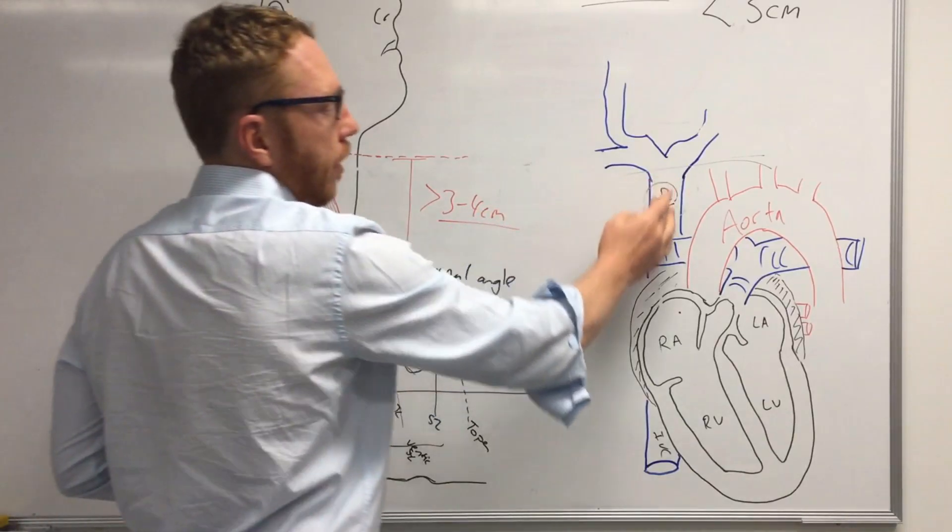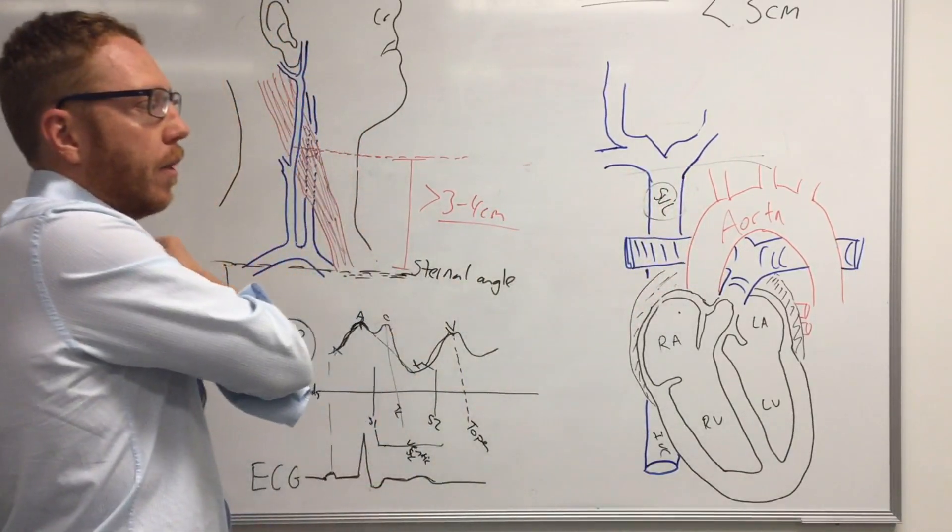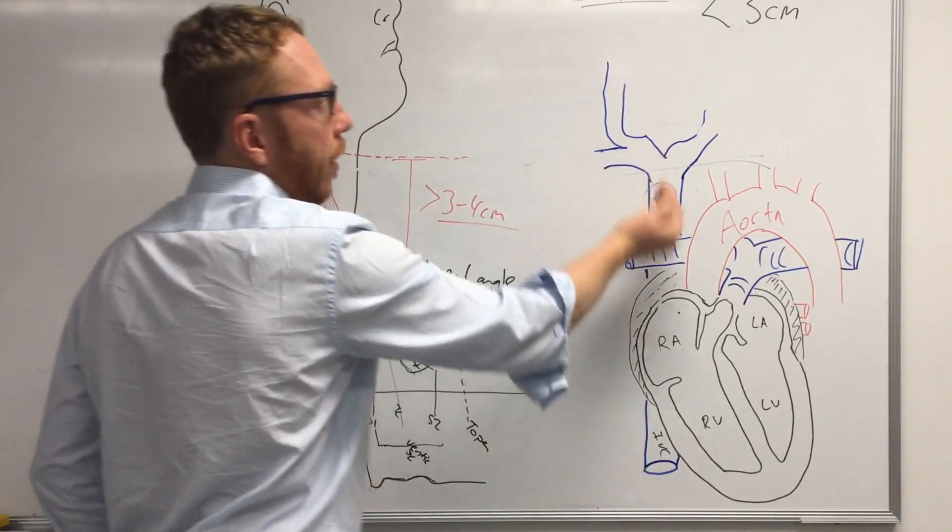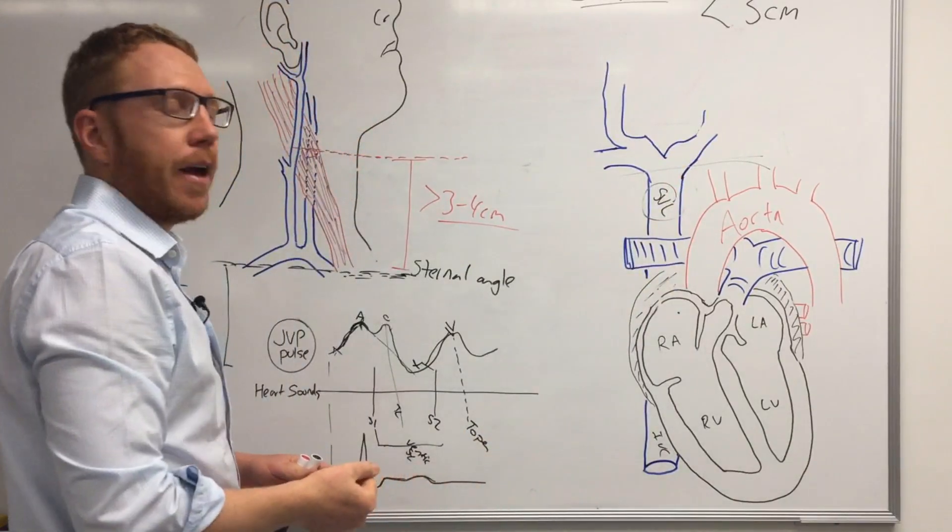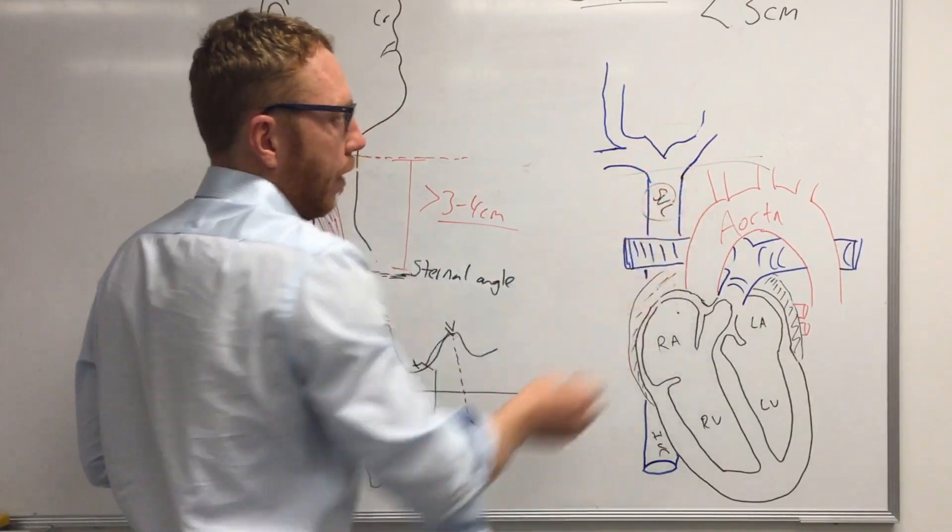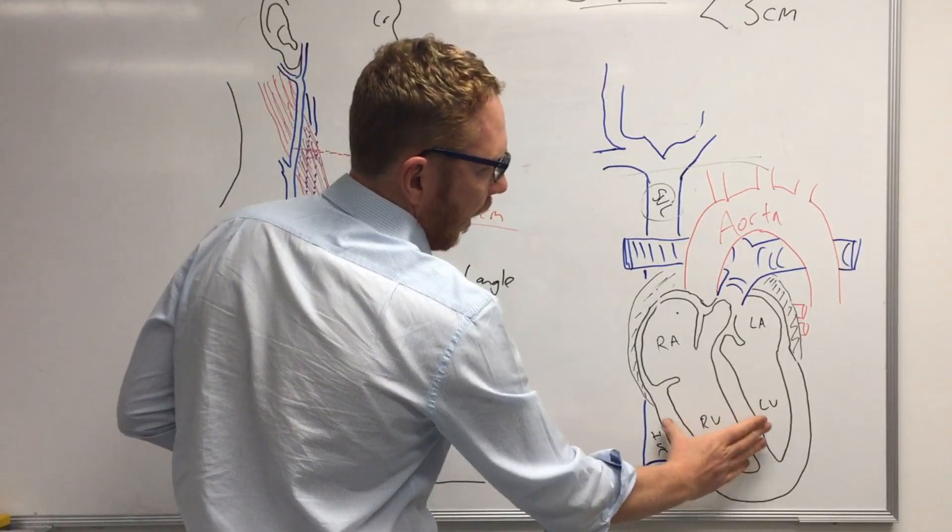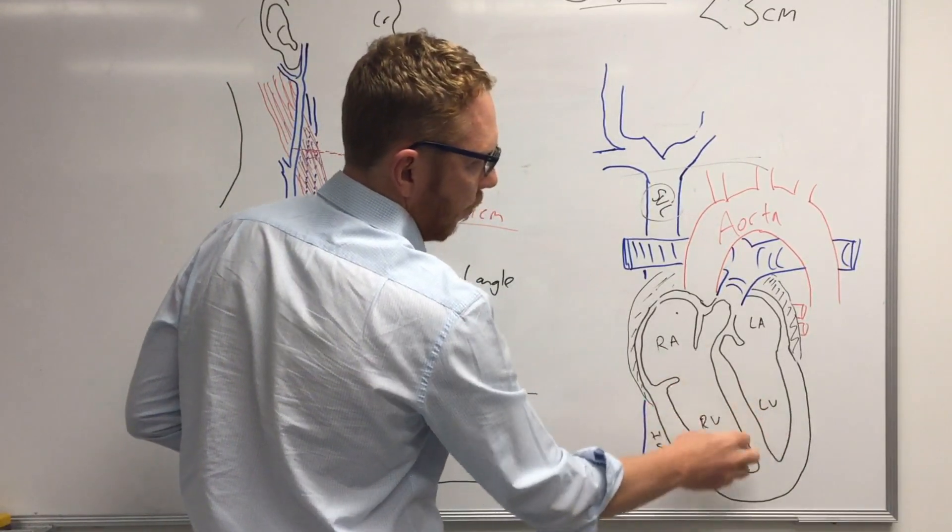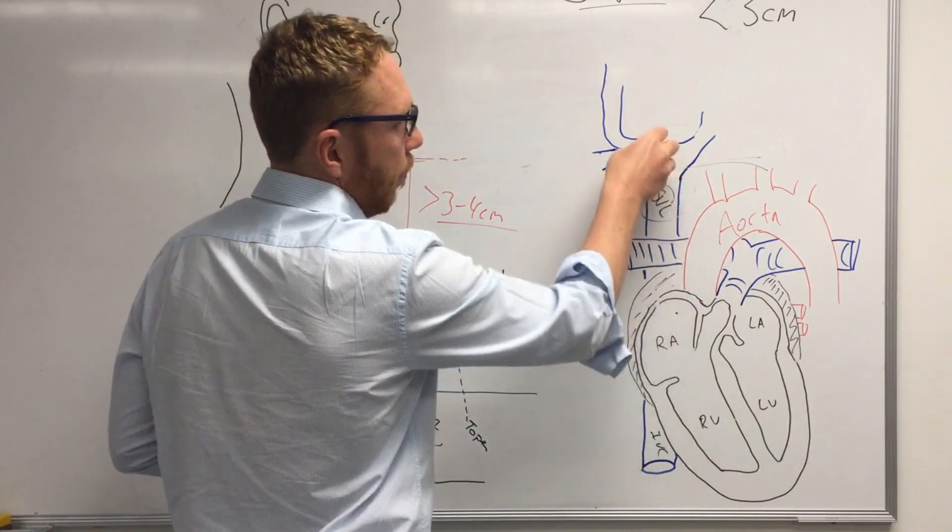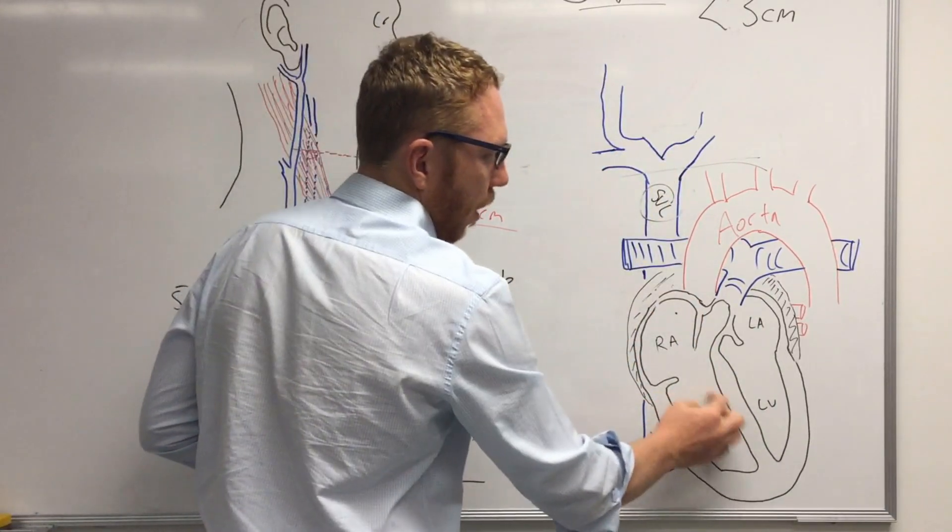Now what else would cause issues with an increased pressure or increased volume or pressure in the JVP is problems with the right ventricle. So if it's failing, if it's not contracting hard enough, fluid will go back and build up into this. So that would be typically right-sided heart failure.